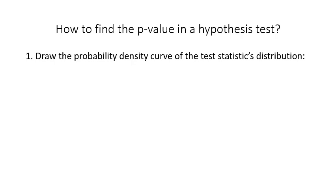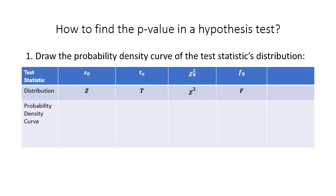In step one, you'll have to draw the probability density curve of the test statistic's distribution. There are only a few distributions involved, and we label the test statistic using the lower case of the name of the distribution. So if you have a test statistic labeled z sub 0, that means the z distribution is used. If labeled t sub 0, the t distribution is used. If labeled chi-square sub 0, the chi-square distribution is used.